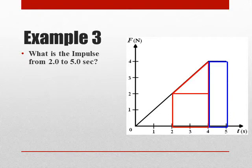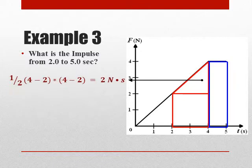So these three shapes get the entire area for this part right here, and the area is going to be equal to the impulse. So the first part is going to be one-half base times height. The base goes from 2 to 4, and the height goes from 2 to 4, so 4 minus 2, 4 minus 2, that's 2 times 2, which is 4, and then half of that is going to be 2 newton-seconds.